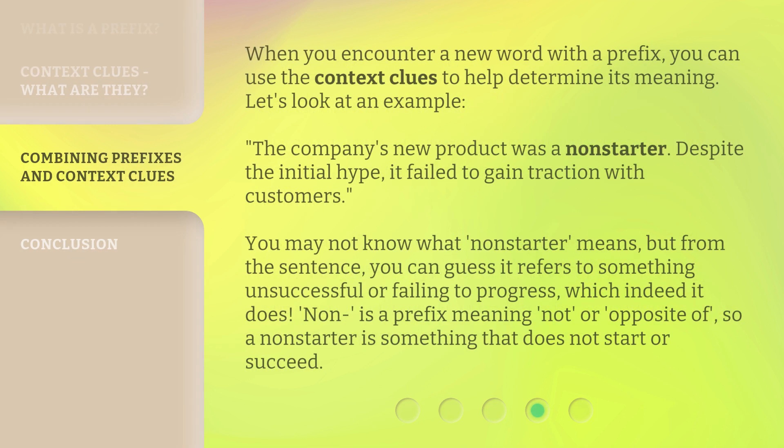When you encounter a new word with a prefix, you can use context clues to help determine its meaning. Let's look at an example: 'The company's new product was a non-starter. Despite the initial hype, it failed to gain traction with customers.' You may not know what non-starter means, but from the sentence you can guess it refers to something unsuccessful or failing to progress — which indeed it does. Non- is a prefix meaning 'not' or 'opposite of,' so a non-starter is something that does not start or succeed.